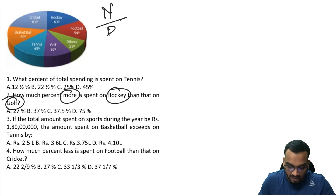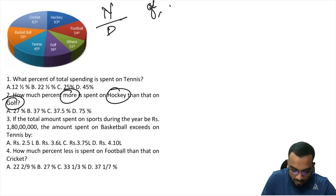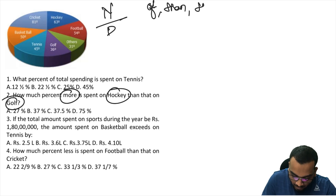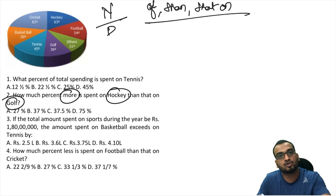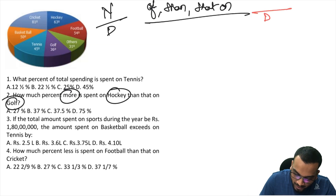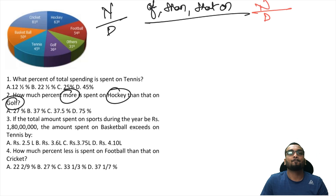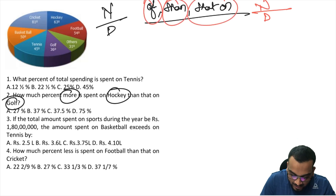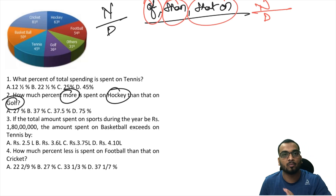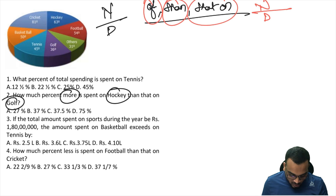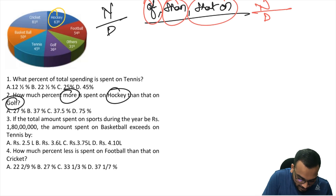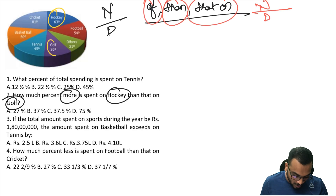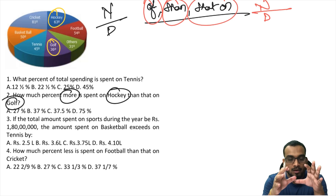Here is a small rule: if anything comes after the word 'of', that goes to the denominator, and the other number goes to the numerator. Now for this comparison of hockey and golf: hockey is 63 degrees, golf is 36 degrees.